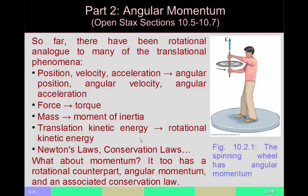The only thing that we have done so far in translational motion which we haven't found an analog for in rotational motion is momentum. It turns out that momentum also has a rotational counterpart which is sometimes called angular momentum. And along with this counterpart there is also an associated conservation law which is the conservation of angular momentum. Those are the things I want to look at today.